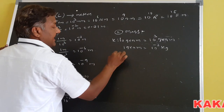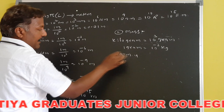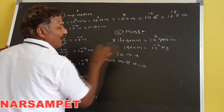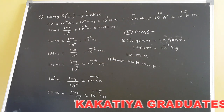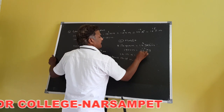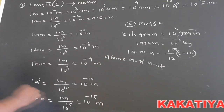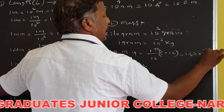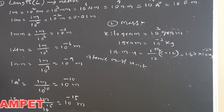Another important mass unit is the atomic mass unit, AMU. One AMU is defined as 1/12th of the mass of a carbon-12 isotope. Numerically, 1 AMU = 1.67 × 10⁻²⁷ kilograms.